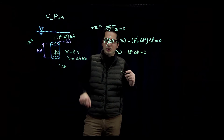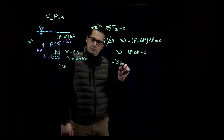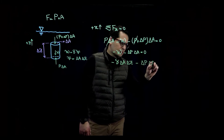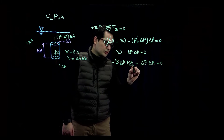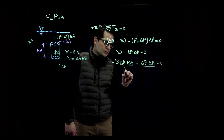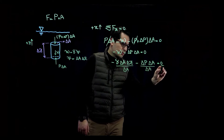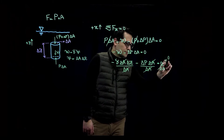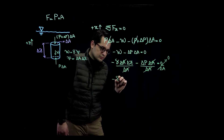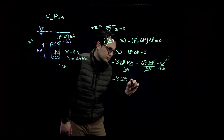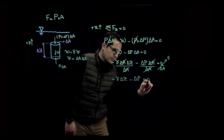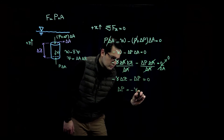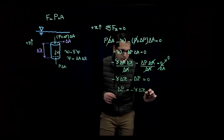Substituting W equals gamma times volume, where volume equals delta A times delta z, and then dividing both sides of the equation by delta A, the delta A terms cancel. Moving delta P to the other side gives us our hydrostatic equation: dP/dz equals negative gamma.